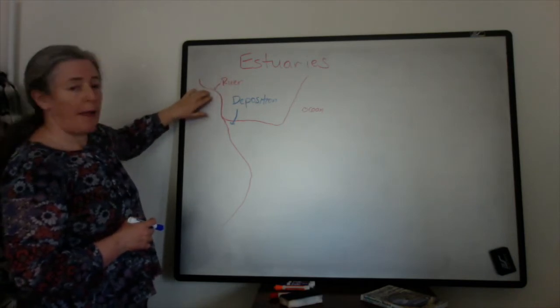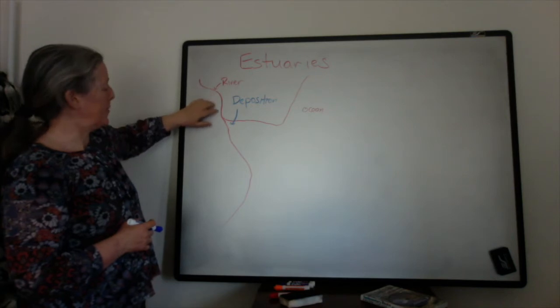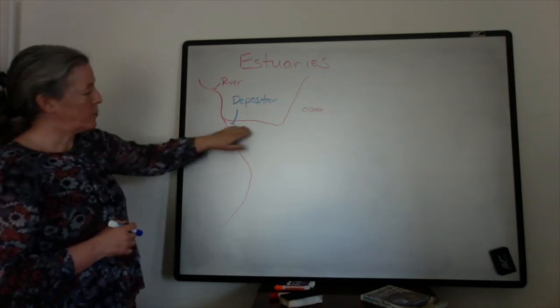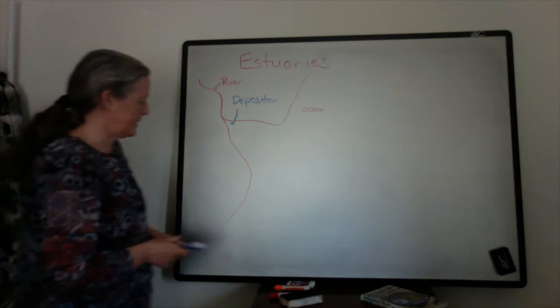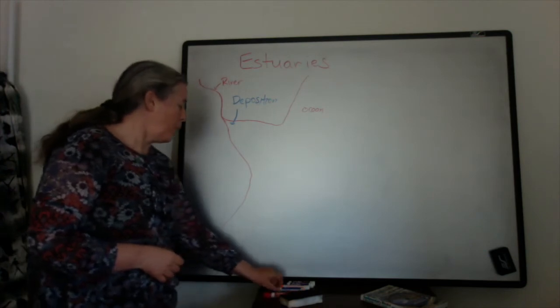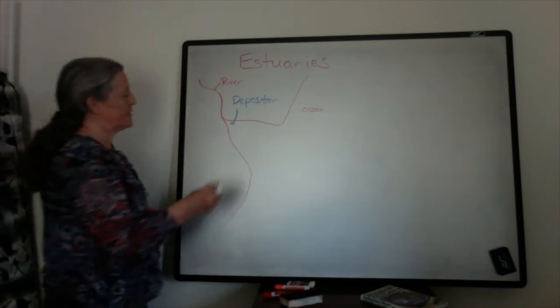At some point there'll be a balance between how much sediment is coming in from the river and how much deposition there is, and that will define the boundaries of the estuary. We still have the main deposition here.